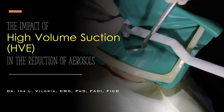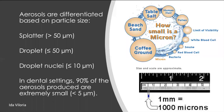A dental aerosol is produced by handpieces, ultrasonic scalers, and three-way syringes. To review, there are different types of aerosols based on particle size. You have the spatter or splatter, which is more than 50 microns; droplets, which is less than 50 microns; and the droplet nuclei, which is less than or equal to 10 microns.